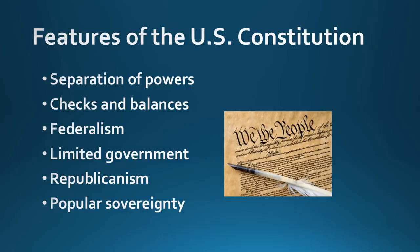Federalism is the division of power between national, state, and local governments. We have separation of powers at the federal level, and then we have federalism, where we have both state and national governments, sometimes overlapping, sometimes not. A limited government can only do what the constitution lets it, and we have a representative form of government from which people are the source of power.